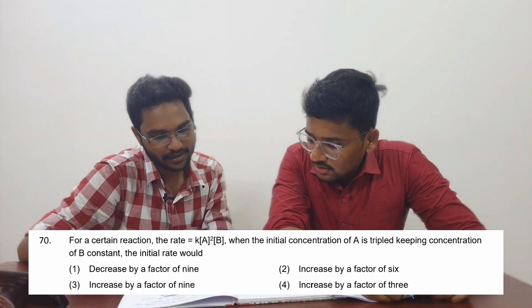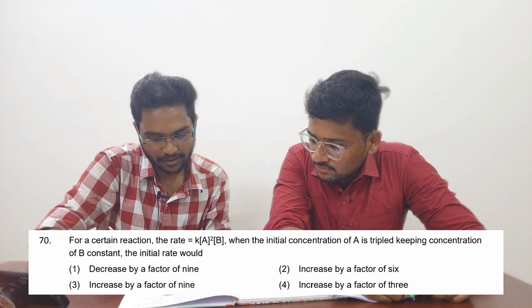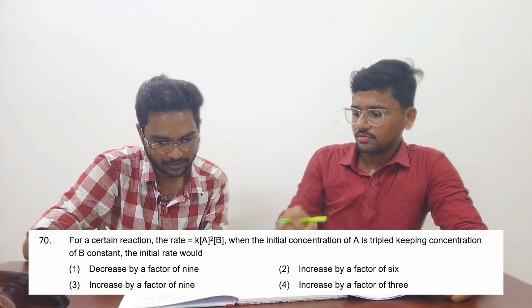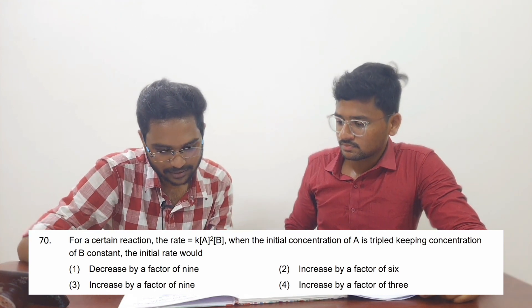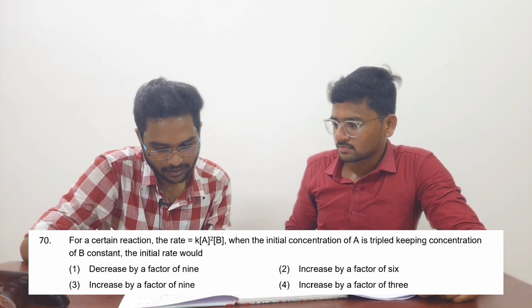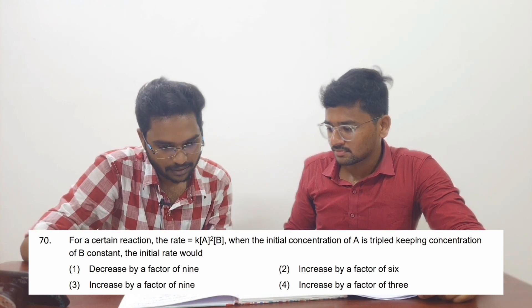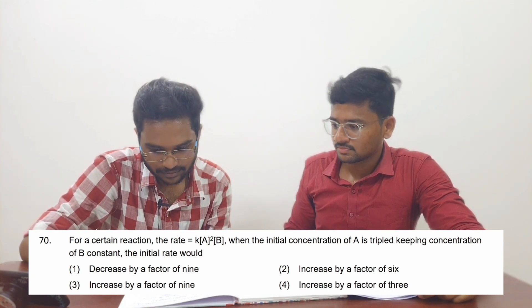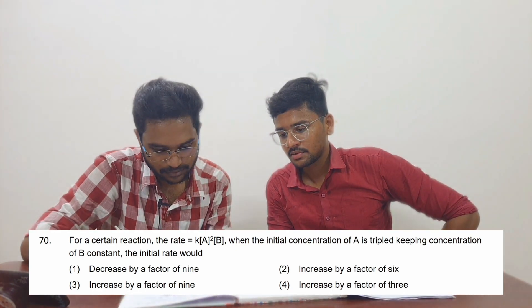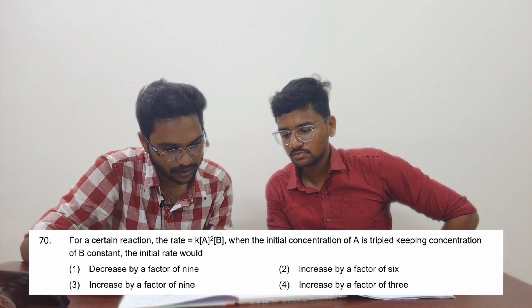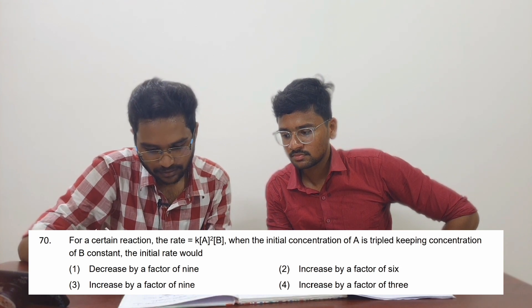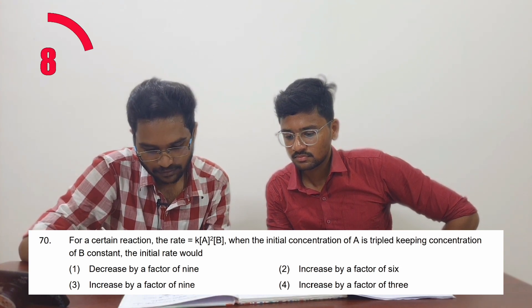Hydration energy. Option 3, hydration energy. 70. For a certain reaction, rate constant V, square V-zero, initial concentration is tripled. We are keeping the concentration on V constant. What is the initial rate after the increase? Square square. Go 3. 3, 70, 30.